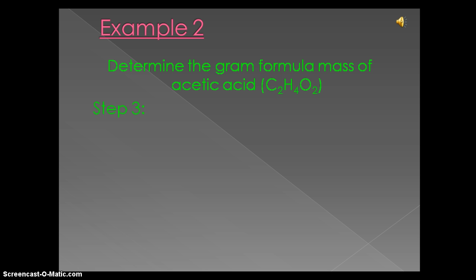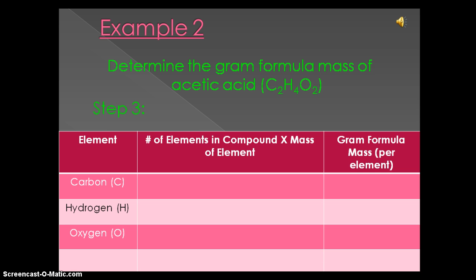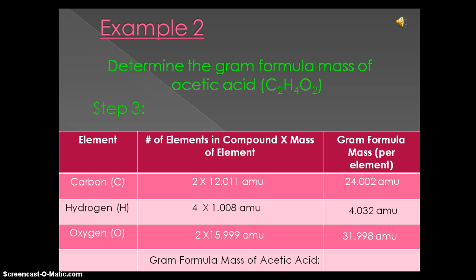The last step in determining Gram mass formula is to multiply the number of elements in a compound times the mass of the element, and then add these values together. For carbon, we would multiply 2 times 12.001 to give us 24.002 amus. Doing the same for hydrogen, we get 4.032 amu. And lastly, for oxygen, we get 3.998 amu. Adding these values together, we will get the Gram mass formula of acetic acid, which is 60.032 amu.